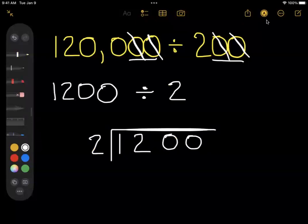So two does not fit into one, so I'm going to put a zero there. But two would go into 12 six times. Six times two is 12.